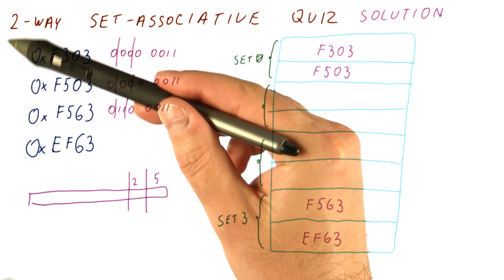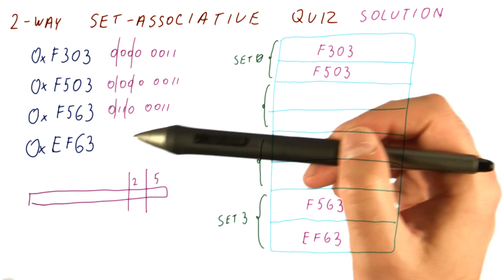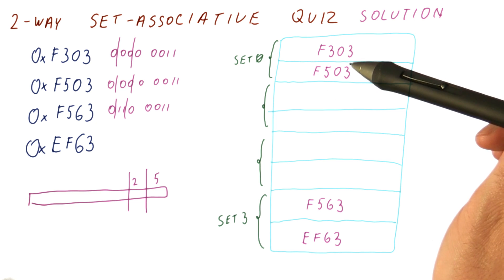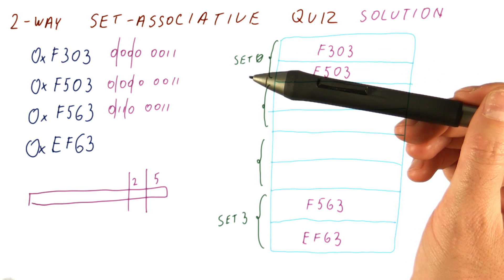This is why we want to have a two-way cache or more, because it reduces the number of conflicts. However, it complicates the tag checks, because now when we're looking for something, we have two places to search before we're sure whether it's there or not.